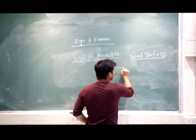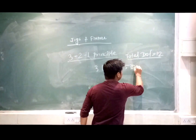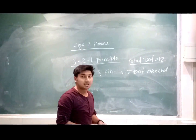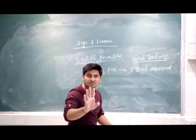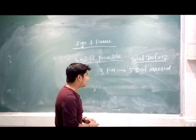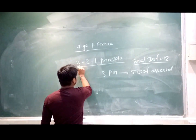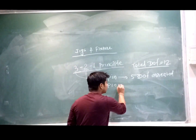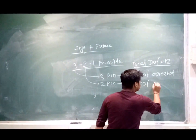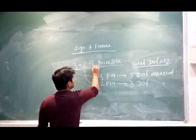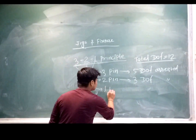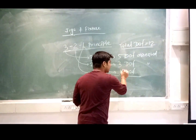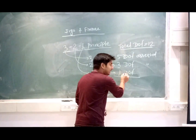When we apply three pins, they arrest five degrees of freedom. When we apply two pins, they arrest three degrees of freedom. When we apply the last one pin, it arrests one degree of freedom. This is the 3-2-1 principle. Total degrees of freedom arrested: five plus three plus one equals nine.